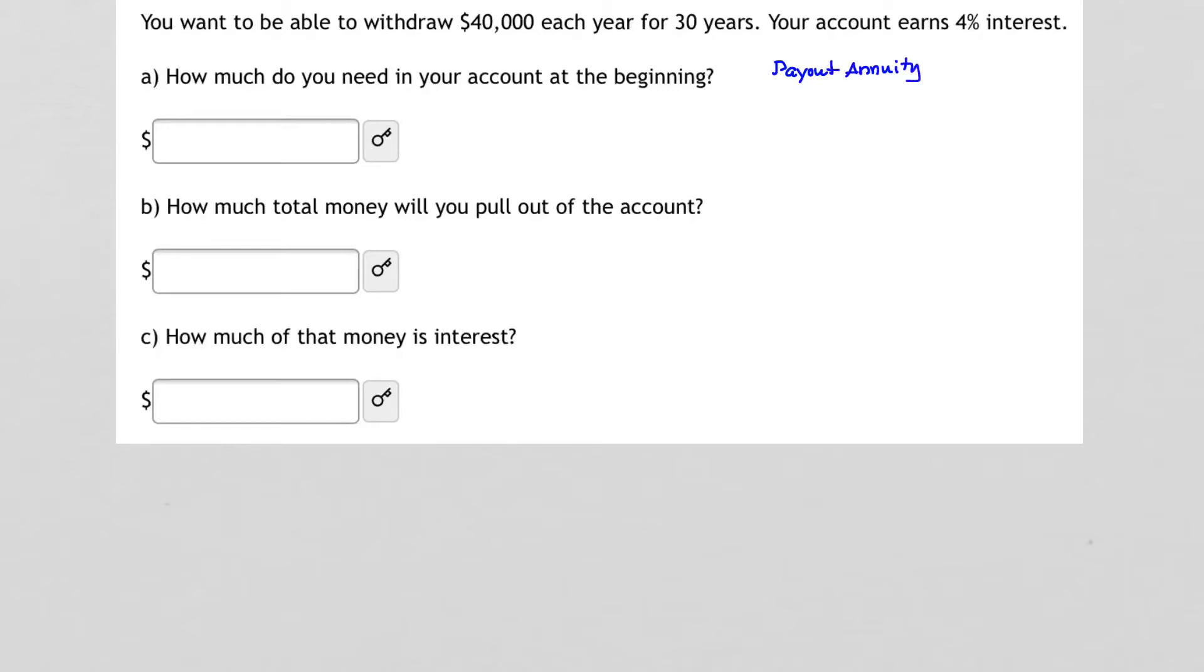Do you remember for your payout annuity formula, it starts by saying that the amount that you're going to be withdrawing from, or the amount in the account from which you're withdrawing, P sub 0, is equal to the amount you withdraw on a regular basis times the quantity of 1 minus the quantity closed of 1 plus R over K raised to the minus NK.